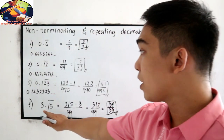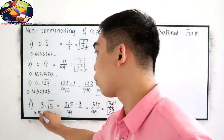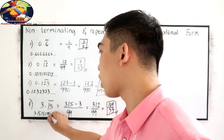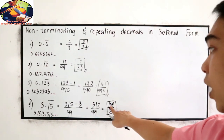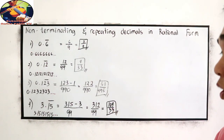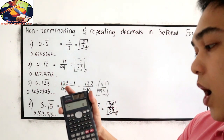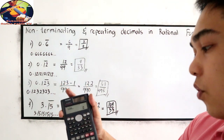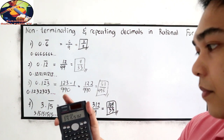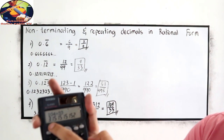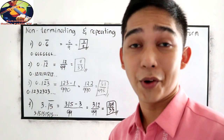We know that 3.15 bar gives 3.151515 and so on. Let us check if 104 over 33 equals 3.1515. So 104 divided by 33 gives 3.15151515. That is correct.